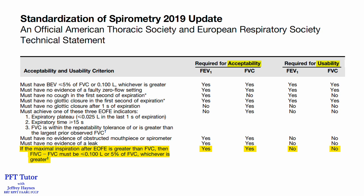In the 2019 ATS-ERS spirometry standard, submaximal inhalation error was added to the acceptability criteria. Specifically, for a test to achieve an acceptability score, the difference between the forced inspiratory vital capacity and the forced expiratory vital capacity must be equal to or less than 100 mLs, or 5% of the vital capacity, whichever is greater.